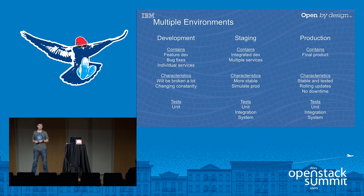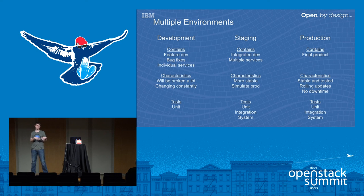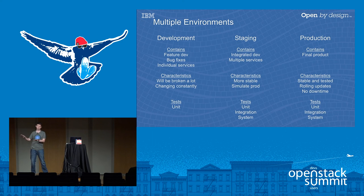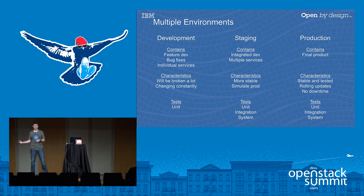Staging is where you integrate all the other past development microservices together. It's more stable — if it's reached this stage, unit tests have shown each microservice works alone, so integration tests just need to make sure they're still talking to each other as expected. It should be almost production-ready. Then finally, production — this is your final product, what your users are using. It's stable and tested, with hopefully no downtime because you've set up a high-availability setup where while you're redeploying one microservice, another copy is still standing. This will have been tested at least twice through unit, integration, and system tests.